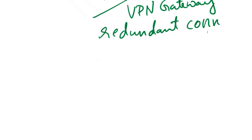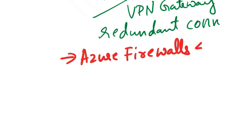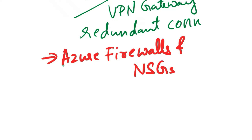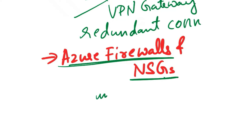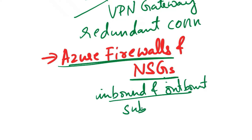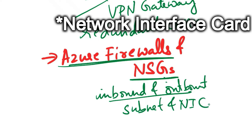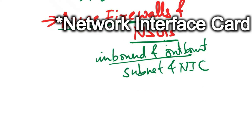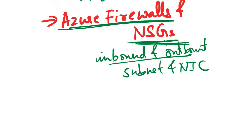The next consideration is Azure Firewalls and Network Security Groups (NSGs). Deploy Azure Firewalls to filter traffic and protect your virtual network. Use NSGs to control inbound and outbound traffic at the subnet and network interface card (NIC) level. Regularly review and update NSG rules based on security requirements.